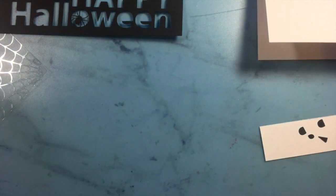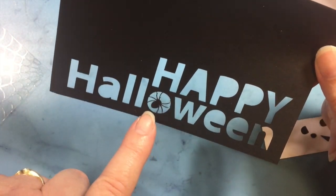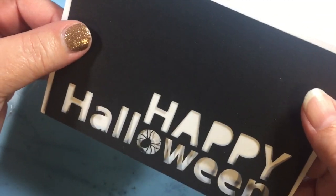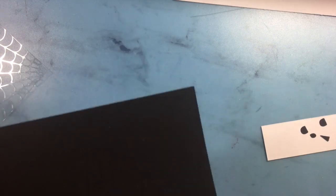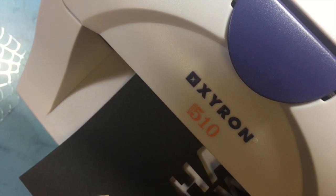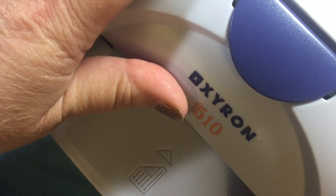Then I have a file that I will share with you that I have cut that says Happy Halloween with a spider in the O, and we're going to attach that to the front panel using my Zyron. I'll just bring that into the frame so you can see it, and I'm just going to send that through the machine and let it get all sticky.